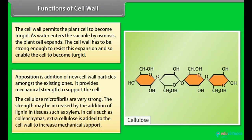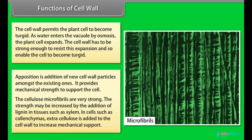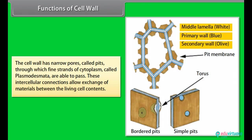The cellulose microfibrils are very strong. The strength may be increased by the addition of lignin in tissues such as xylem. In cells such as collenchyma, extra cellulose is added to the cell wall to increase mechanical support. The cell wall has narrow pores called pits through which fine strands of cytoplasm called plasmodesmata are able to pass. These intercellular connections allow exchange of materials between the living cell contents.